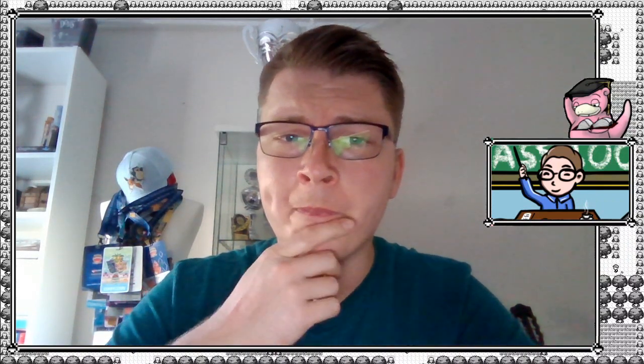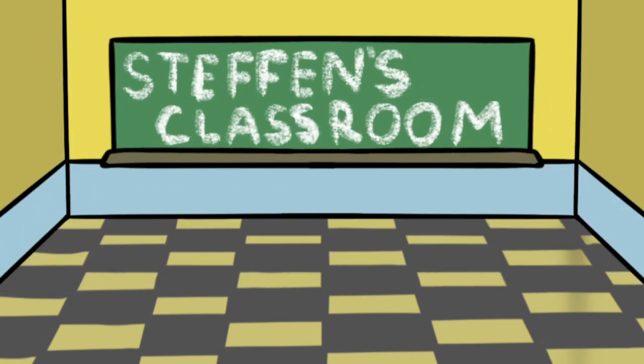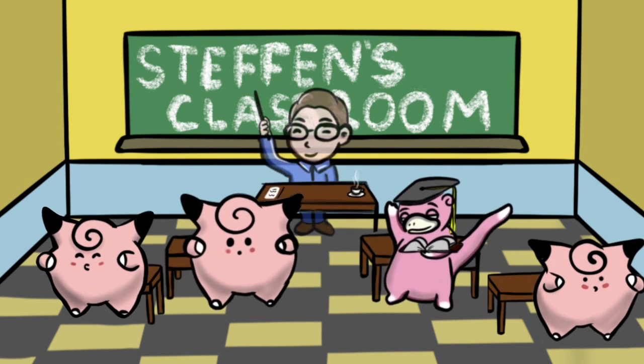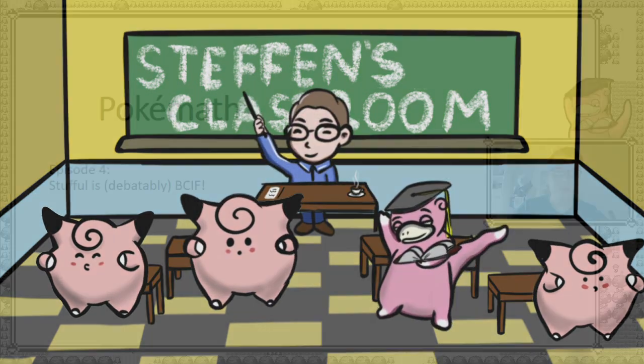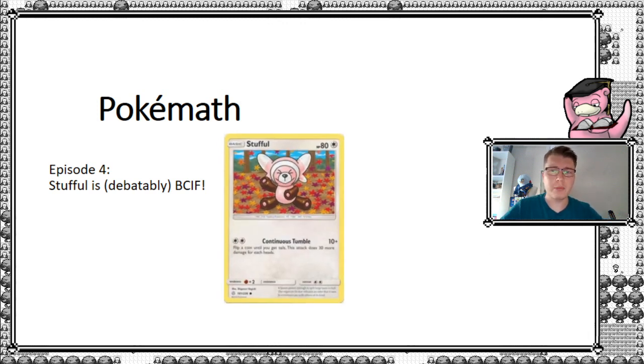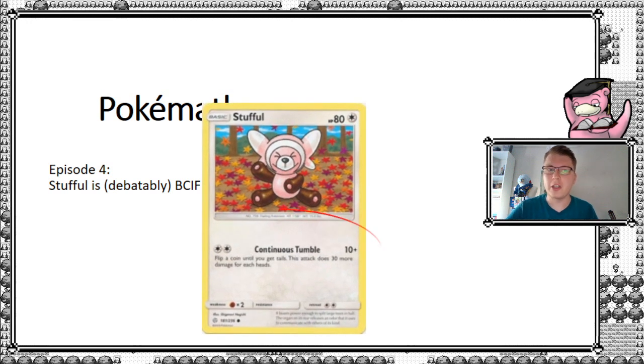Potentially infinite damage? Hmm, let's check that one out. Hello and welcome to PokeMath episode 4. My name is Stefan Eriksson and I'll be your host for today's episode where we're going to look at Stufful, the potentially best card in format. But why am I saying that? Well, when I look at a card and I'm seeing something that can do potentially infinite damage, I'll at least check it out.